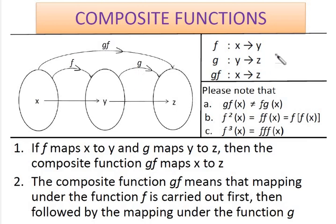Let's see the function. This is the function f that maps x to y, and this is the function g that maps y to z. And this is the function gf that maps x directly to z. In the gf function, the f function must be carried out first before g — meaning the mapping under f is carried out first, then followed by g.